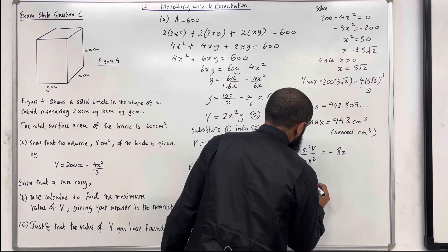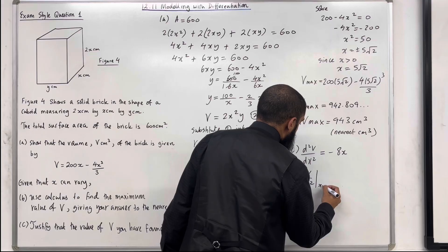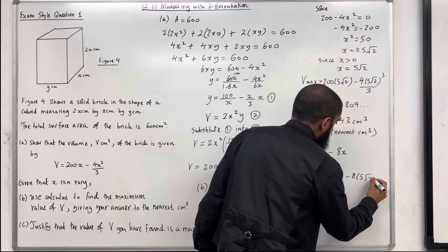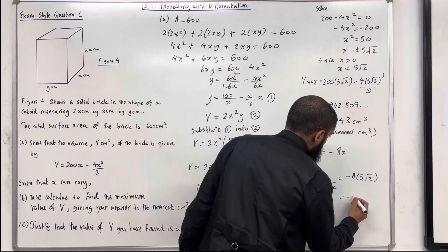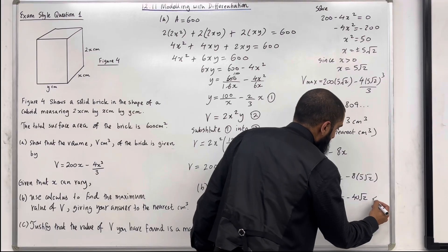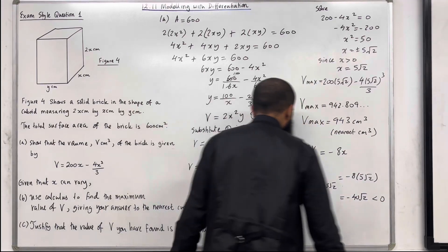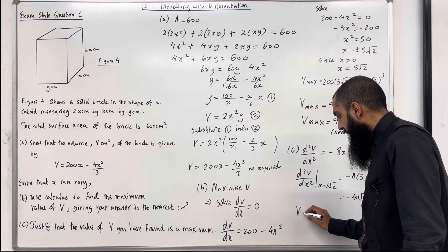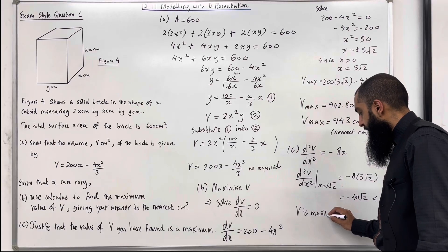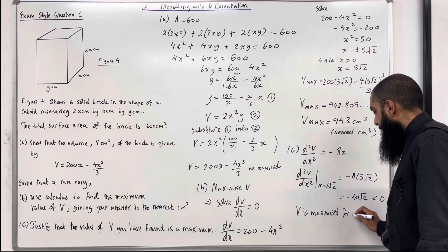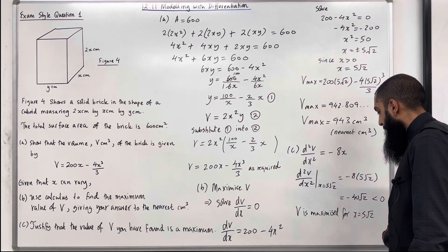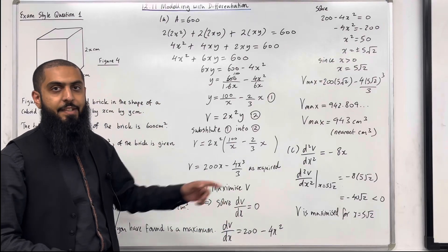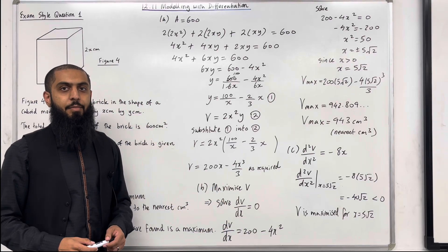We want to substitute x equals 5 root 2 into the second derivative. So d²v over dx² evaluated at x equals 5 root 2 is minus 8 multiplied by 5 root 2, which is minus 40 root 2, which is less than 0. Since the second derivative is less than 0, we conclude that v is maximised at x equals 5 root 2. We have proven this is indeed a maximum. That completes exam style question 1.